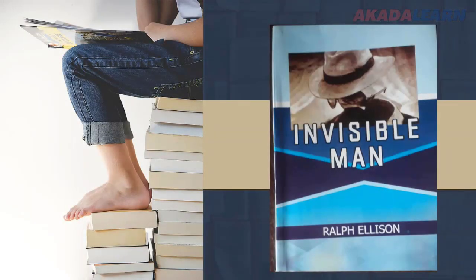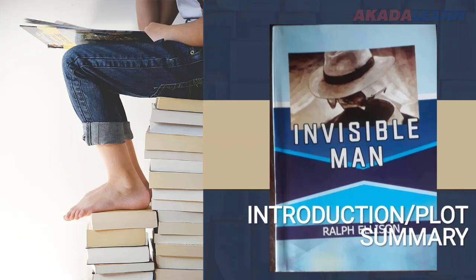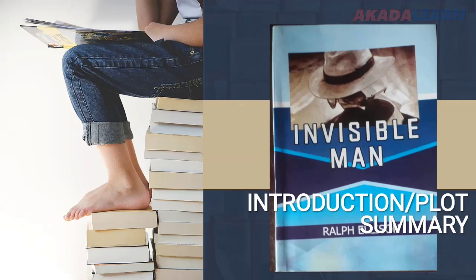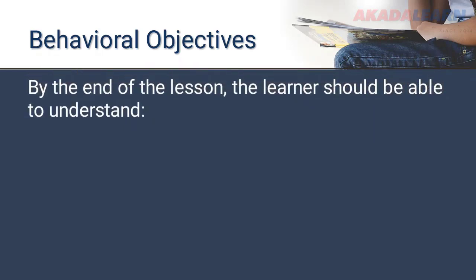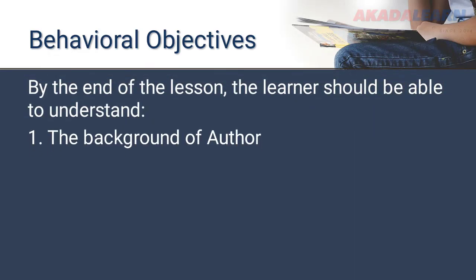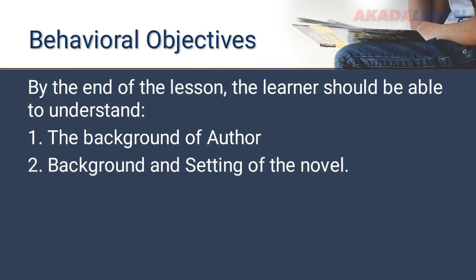Welcome back, literature students, to another exciting literature class. Today we're looking at a very interesting book titled Invisible Man by Ralph Ellison. We'll be looking at the introduction as well as the plot summary. Our objectives during this lesson are to understand the background of the author, the background and setting of the novel, as well as the plot summary.